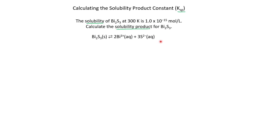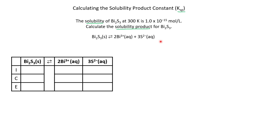We just saw this equation, and the best way to handle KSP calculations is with an ICE table. Let's set up our ICE table — initial, change, equilibrium. For KSP, these are generally very simple. Initially, you're only going to have solid; you're going to have no cation, no anion. We know this equilibrium is going to shift to the right. We don't know how much, so we're going to use X. Our change is going to be 2X for our bismuth and 3X for our sulfide — the 2 comes from the coefficient 2, and the 3 comes from the coefficient 3. Both are positive because we know we're shifting toward products. Our equilibrium concentrations are simply 2X and 3X.